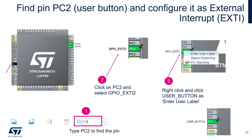Now configure PC2, which is connected to the user button (center button of the joystick) on the discovery kit. Configure it as an external interrupt so we can detect button presses, which will generate an interrupt and a callback for use in our application.